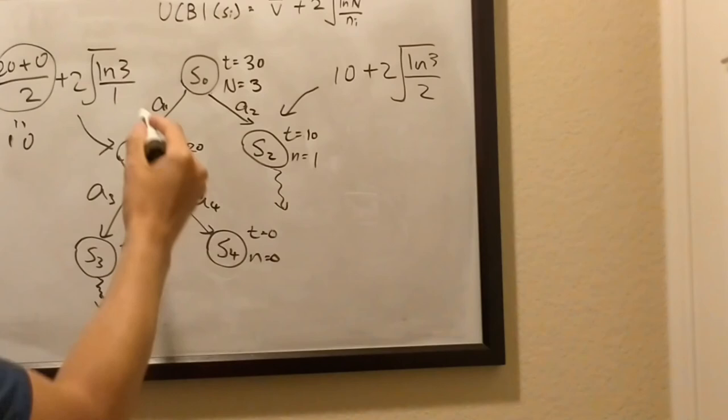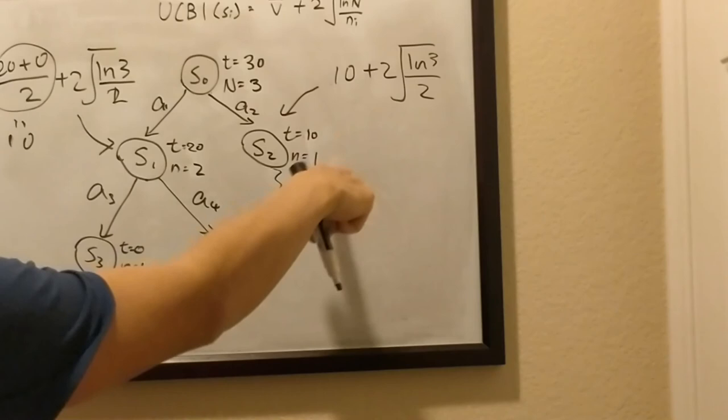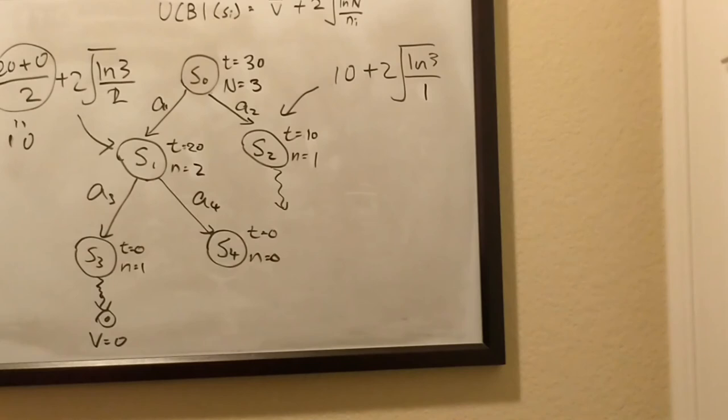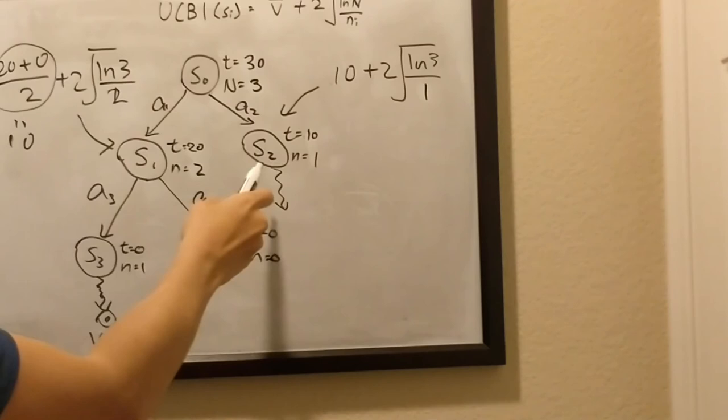My apologies, we visited this state twice, so this is actually 2, and we visited this only once, so this is 1. However, this number actually is bigger than this number, so yes, same logic applies at this point in time. S2 is still more valuable than S1.